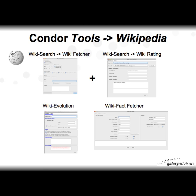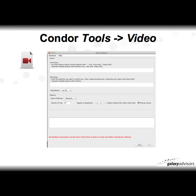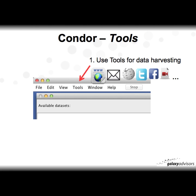For Facebook there's a Facebook Fetcher. For Wikipedia, there are several tools: Wiki Search is a two-step process — use Wiki Fetcher to fetch articles associated with your topic, and after collecting those articles and external web links, you can use up to 10 different ways to rate those nodes. There's also Wiki Evolution if you want to look at the evolution of an article or topic in Wikipedia and watch its development over time. And there's a Wiki Fact Fetcher. There is also a Video tool to search the internet for videos on your particular topic.